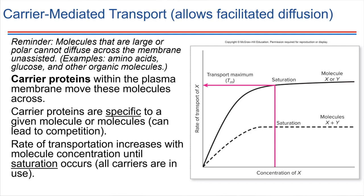Let's come back to this idea of carrier-mediated transport. This is something that's usually for larger molecules — molecules that are not able to diffuse directly across the plasma membrane. They need some assistance. This works well for things like amino acids or glucose or other sorts of things that might diffuse in from the bloodstream.